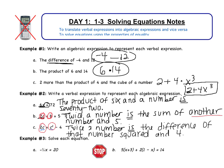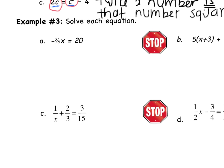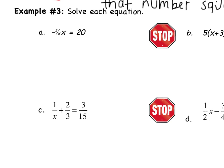That was the translating objective. Now we're going to move on and solve equations — again, something you've done before. Example 3, part A: we have negative 5/8 times x equals 20. To isolate x, I need to get rid of the negative 5/8. Since x is being multiplied by negative 5/8, I divide both sides by negative 5/8. The negative 5/8 cancels on the left, leaving x equals 20 divided by negative 5/8.